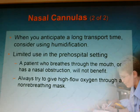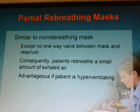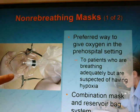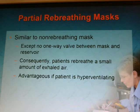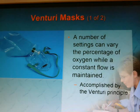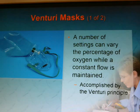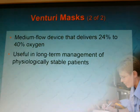Always try to give high-flow oxygen through a non-rebreathing mask. A partial rebreather mask is very similar to a non-rebreather mask, except no one-way valves are placed between the mask and the reservoir. Without those valves, the patient re-breathes a small amount of exhaled air, which can be advantageous for a patient who is hyperventilating. A venturi mask is a medium-flow device that delivers 24% to 40% oxygen and is used for long-term management of physiologically stable patients — the percentage of oxygen can vary while a constant flow is maintained.